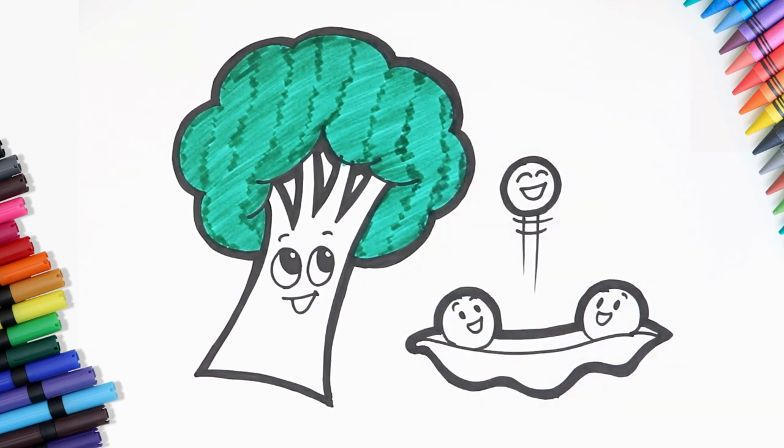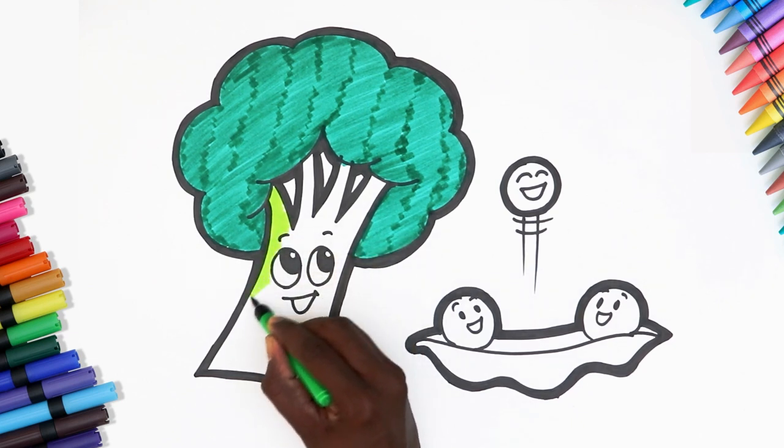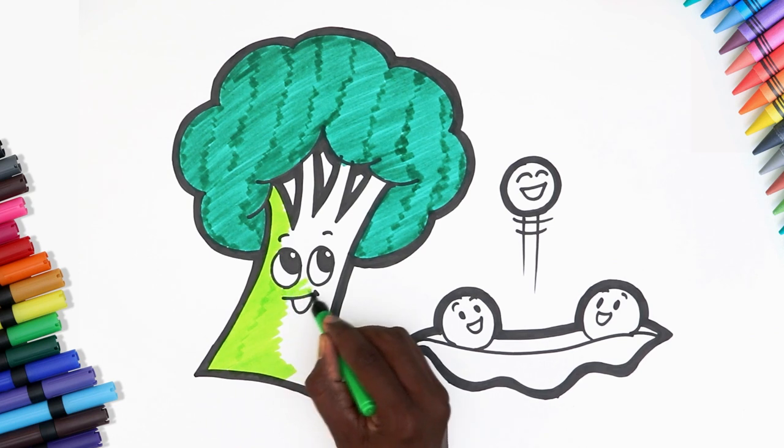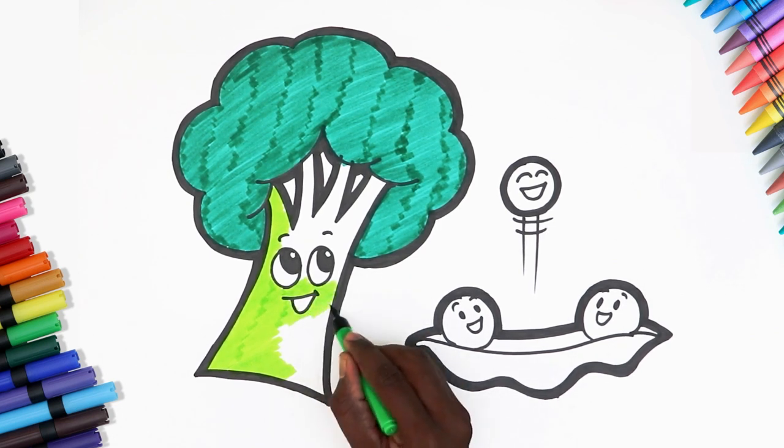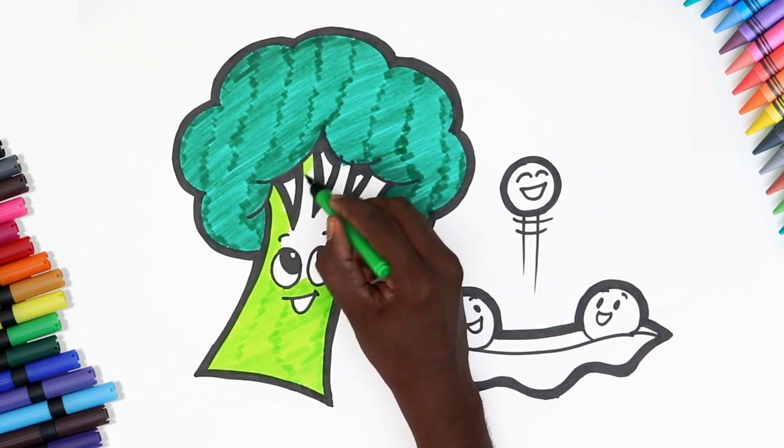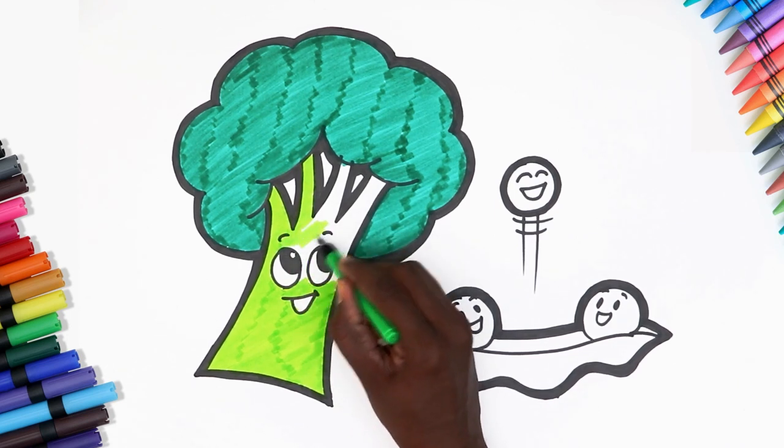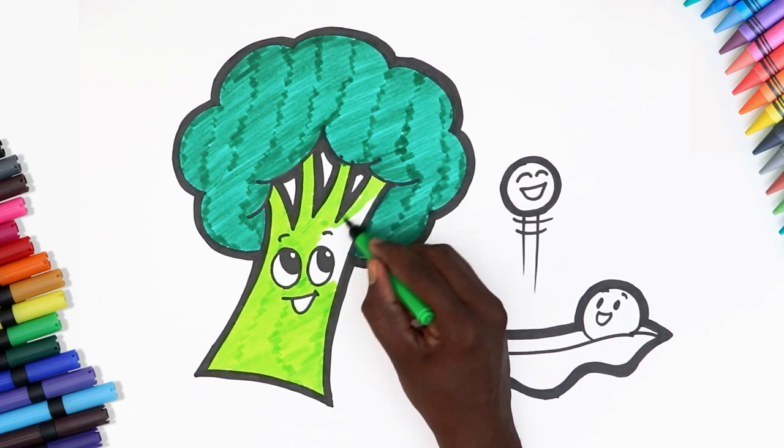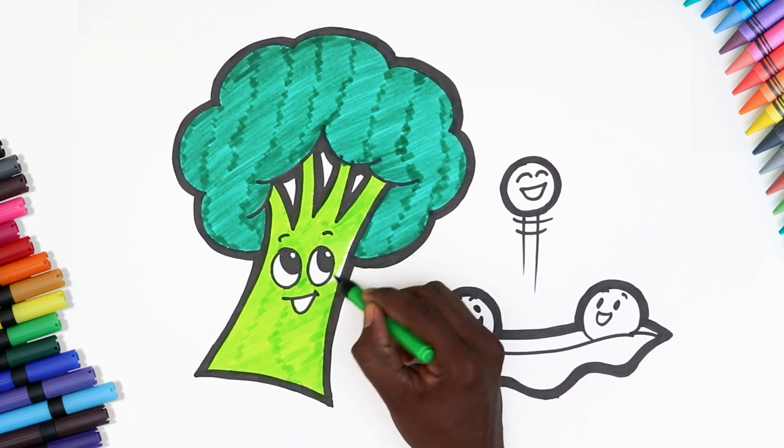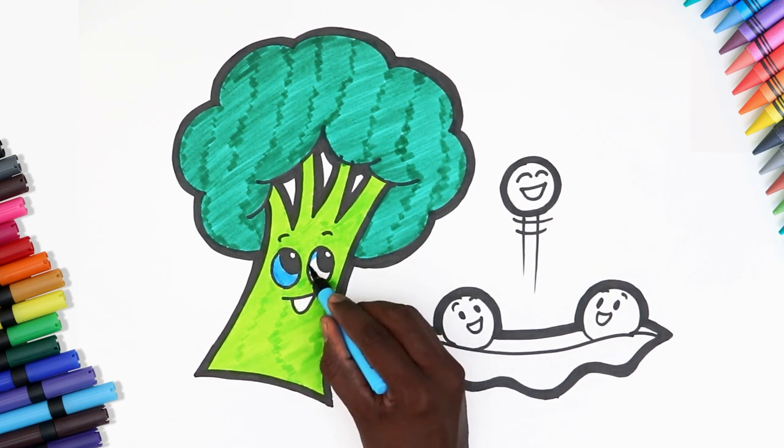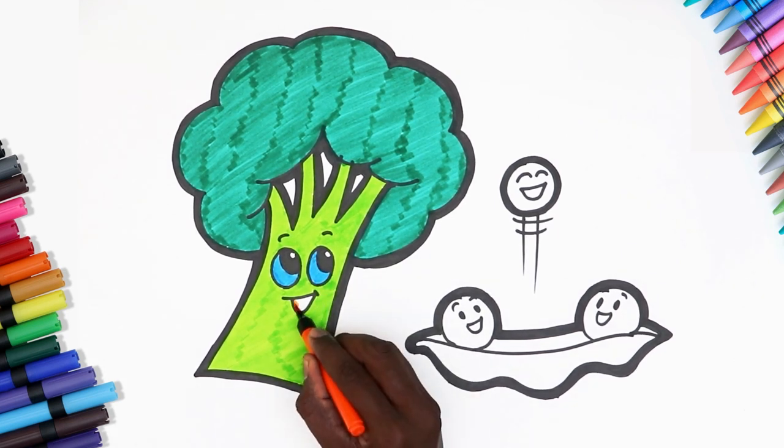Coloring is my favorite. Mr. Broccoli already looks great. For the stalk, let's use a light green shade. Here we go. Broccoli is very healthy and so tasty too. Don't you agree? Add some blue to his eyes. And orange for the mouth. Great!